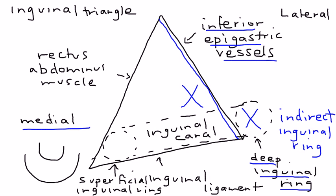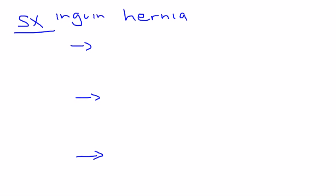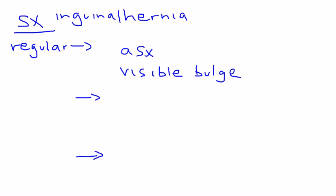The symptoms depend on the severity of the hernia. If it's a regular inguinal hernia, it can really be asymptomatic — no symptoms. It will just be a visible bulge; the skin is still covering it, so you don't see the intestines, just the bulge. There may also be some vague discomfort, but that's pretty much it.